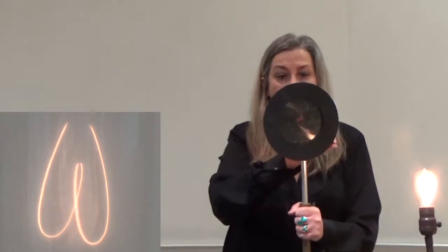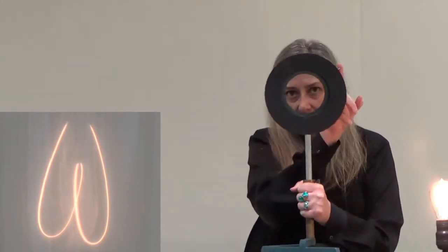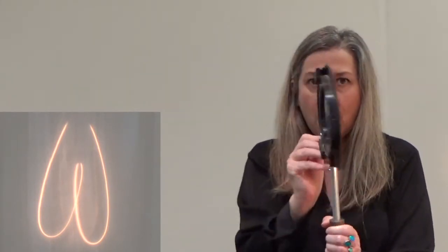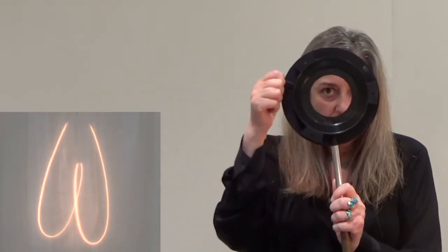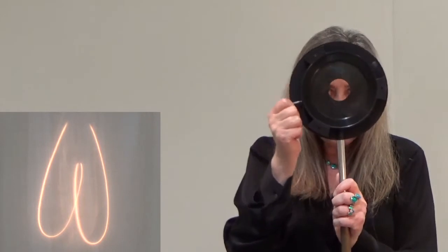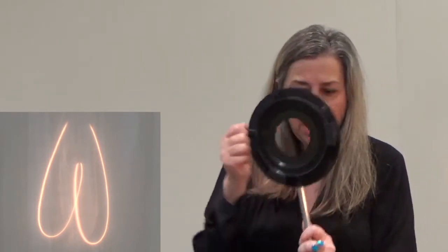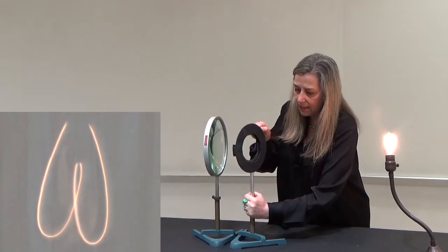that's called an iris. It's an opening and closing aperture that looks like the iris in your eyes. You can see through it a lot of light or a little light. If I put this exactly in front of the lens here,